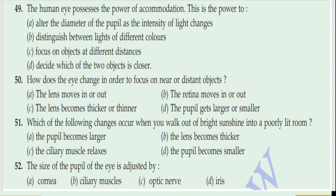Question 49 is the last question on this page — after this video you will see parts 2, 3, and 4. Question 49: The human eye possesses the power of accommodation. This means the ability to focus on objects at different distances. So the correct option is: focus on objects at different distances.